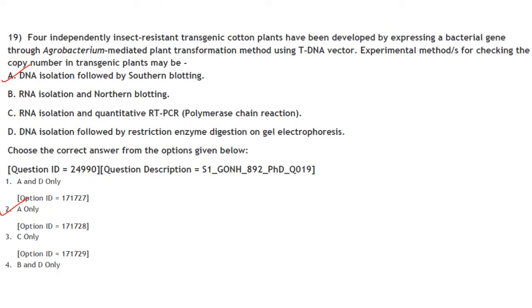Independently, insect-resistant transgenic cotton plants have been developed by expressing a bacterial gene through Agrobacterium-mediated plant transformation using a T-DNA vector. For checking copy number in transgenic plants, you perform Southern blotting — specifically DNA isolation followed by Southern blotting. Answer is option 2, A only.